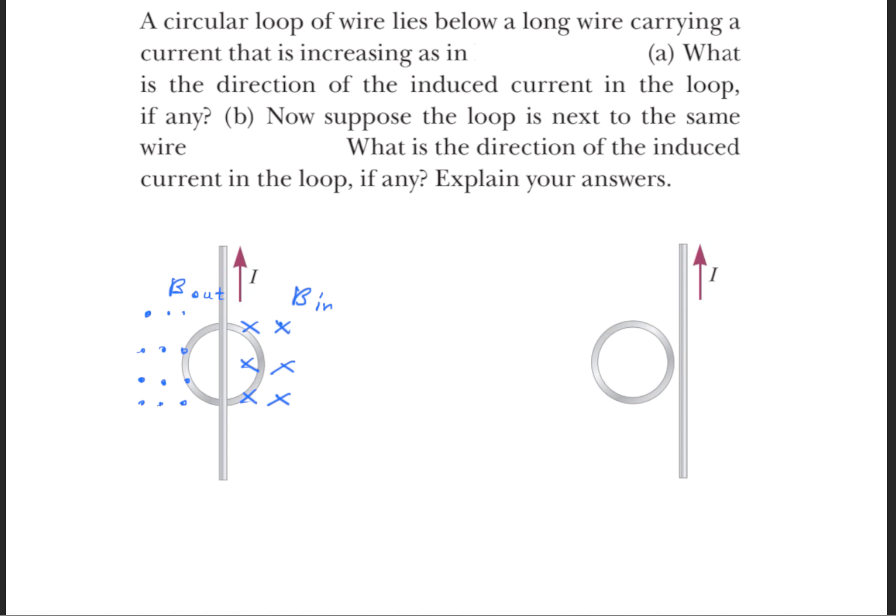And on the right side, we have the magnetic field going into the page. Now, because the magnetic field is going in and out on this circular wire, the magnetic field is going to cancel each other out. Thus, the flux that's passing into this surface will result in a net flux that is zero.